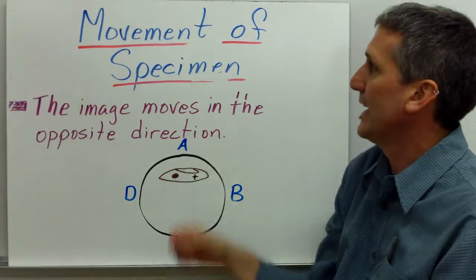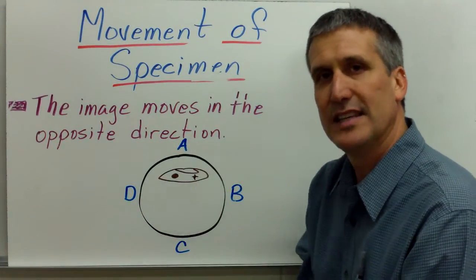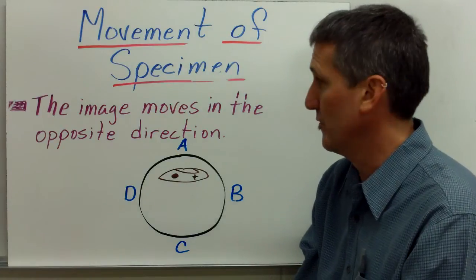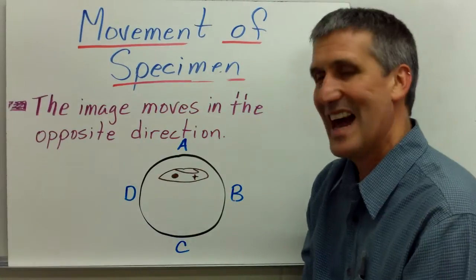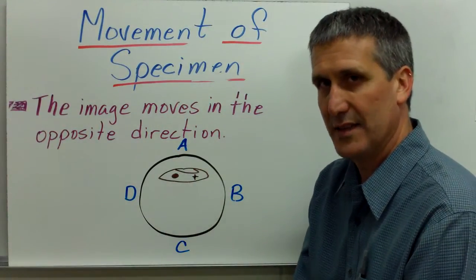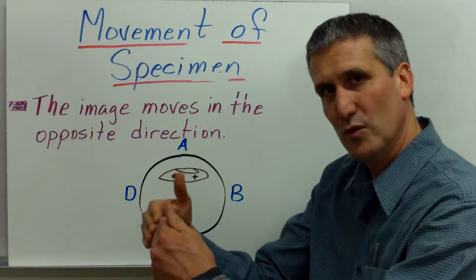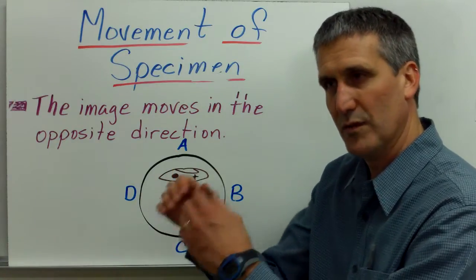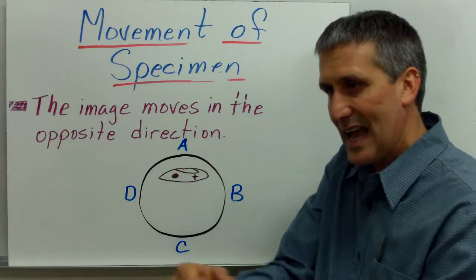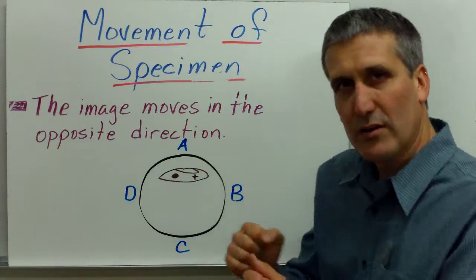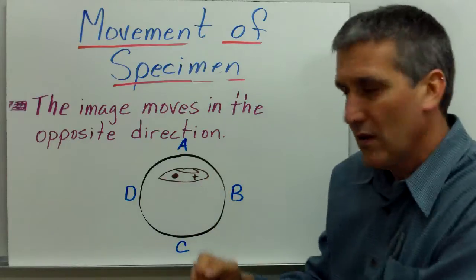The next thing to understand is how the actual image moves. When you move the slide on the stage, how does the image move in the field of view? And the thing to remember is that the image moves in the opposite direction from how you move the slide on the stage. So, if you move the slide up, the actual image moves down in the field of view. If you move the slide down on the stage, the image moves up in the field of view. And it's actually opposite, so it's like the microscope dance, okay? You opposite, it's moving opposite, okay?